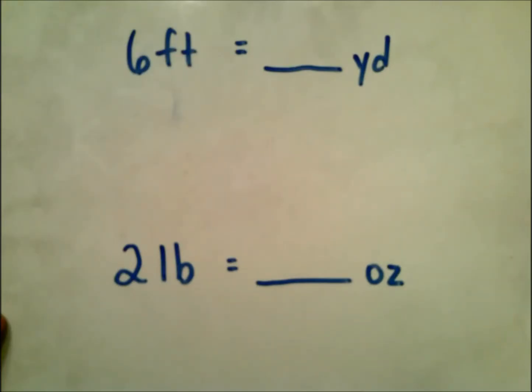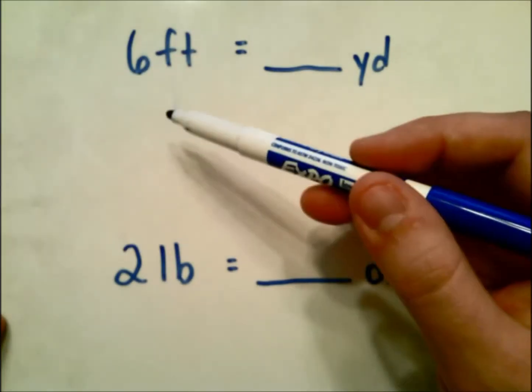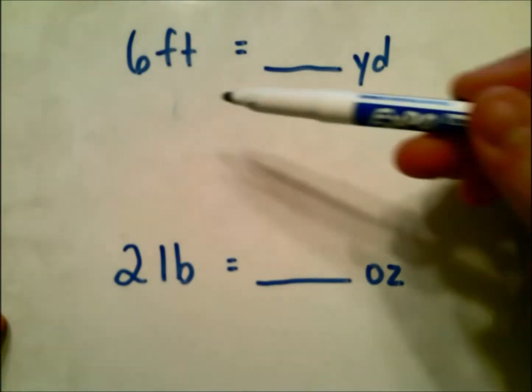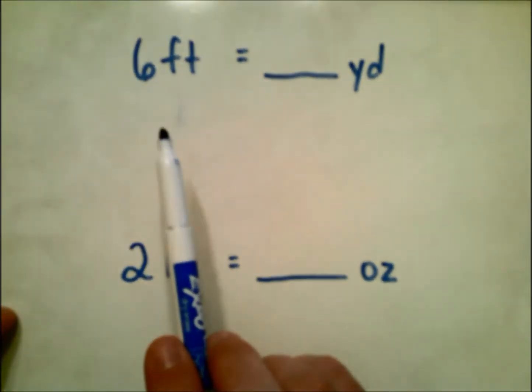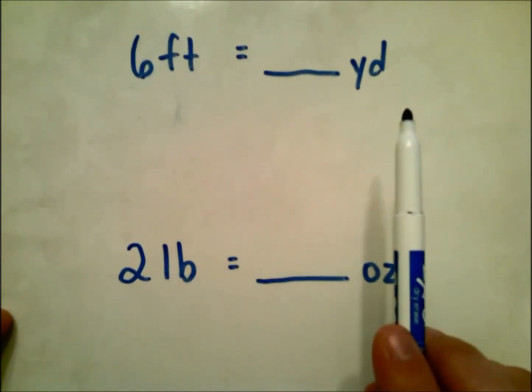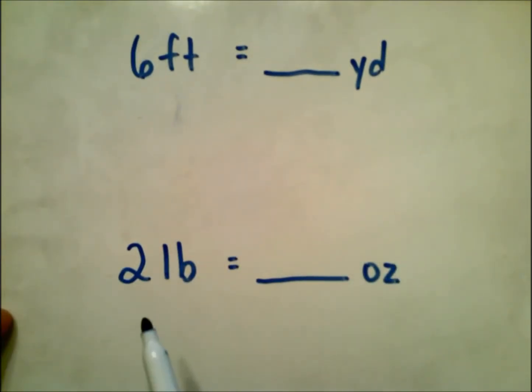One thing I like to use is: are we going from a larger unit to a smaller unit, or a smaller unit to a larger unit? Basically what that means is the unit that they're giving us - are we converting into a larger unit or a smaller unit based on what they're already giving us?